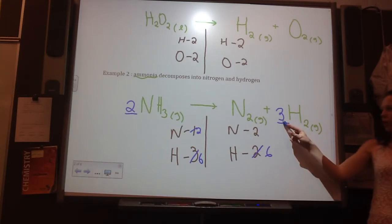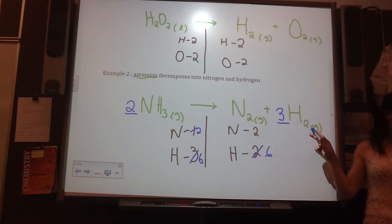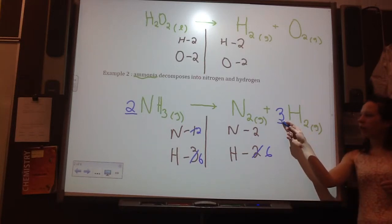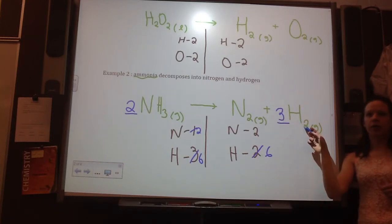Now, remember, the coefficient is multiplied by the subscript to find the number of atoms. Sometimes I find students start adding. But remember, whenever you go here to here, that's times. So, that's why three times two is six.